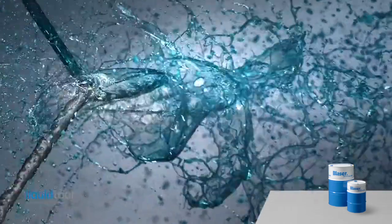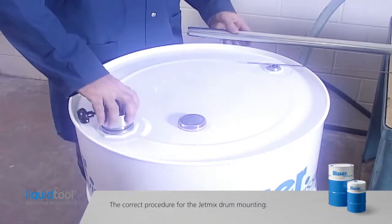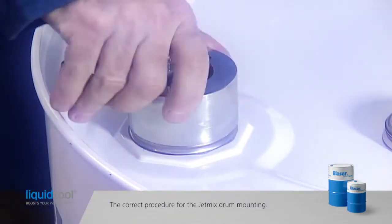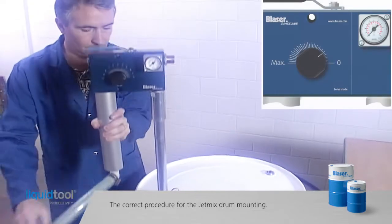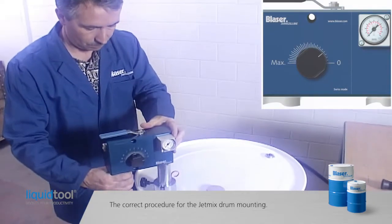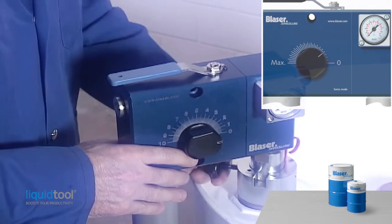Before installing the jet mix, make sure that the ball in the check valve on the bottom of the pipe moves freely. First fit the screw adapter with the measuring scale to the drum. Now insert the jet mix in the large opening and fix it in the correct position with the clamping screw.